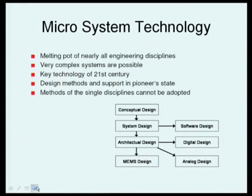Microsystem technology is a melting pot of nearly all engineering disciplines — it is a multi-disciplinary entity. Very complex systems are possible and it is a key technology for the 21st century. Methods of single disciplines cannot be adopted straight away. If you look at the overall microsystem technology, there are four components of design: conceptual design, system design, architectural design (with digital and analog components), and finally MEMS design. All three prior design levels must be in place before MEMS design can be taken up.